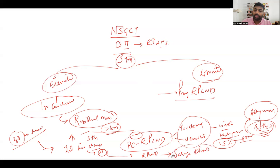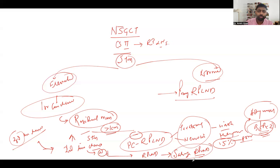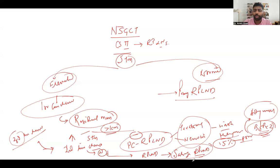Salvage RPLND is offered after a patient has received two lines of chemotherapy and markers remain normal. Salvage RPLND has a poor outcome — if a mass persists after two lines of chemotherapy, it indicates worse overall survival and disease progression compared to post-chemo RPLND. The outcomes of salvage RPLND are worse than post-chemo RPLND.